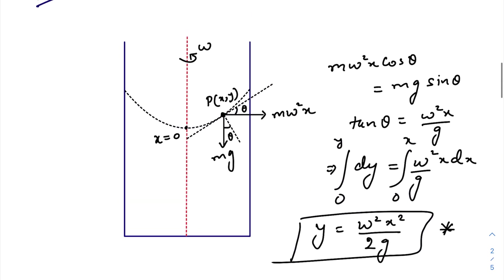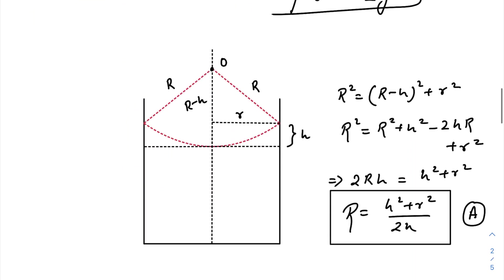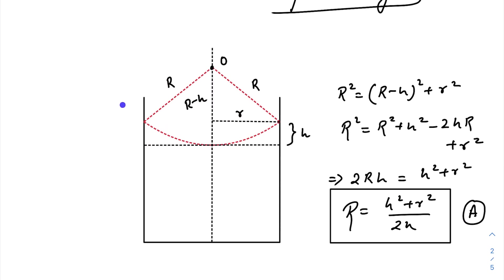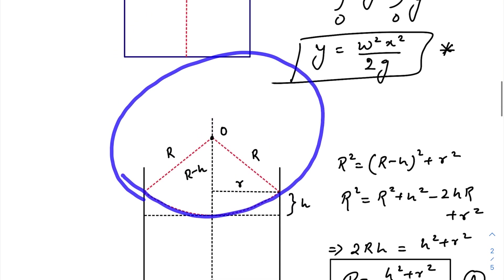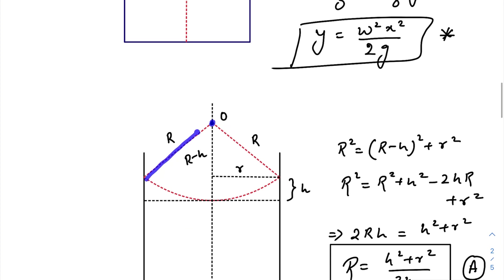Now let us come to our question. See, in the question they have already said that we can consider this as a spherical surface. So if this point O is the center, this will be the radius of curvature, this is the radius of the beaker.